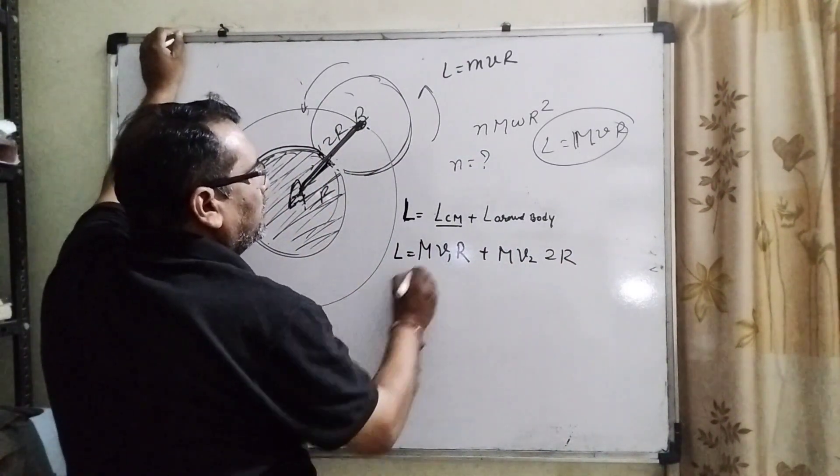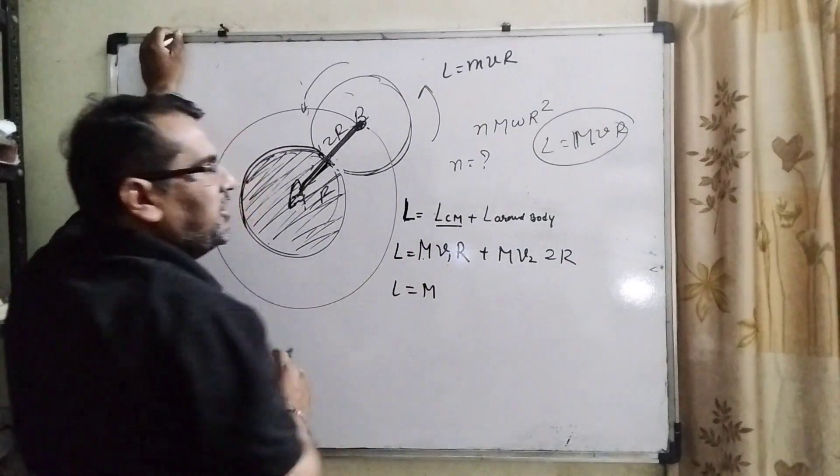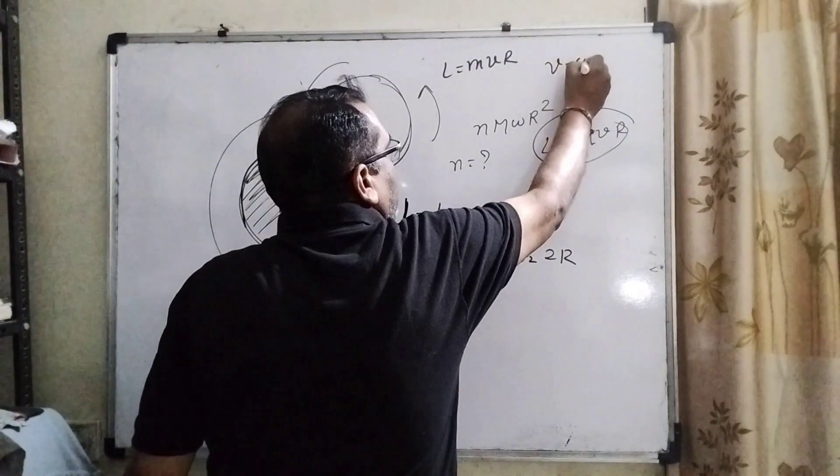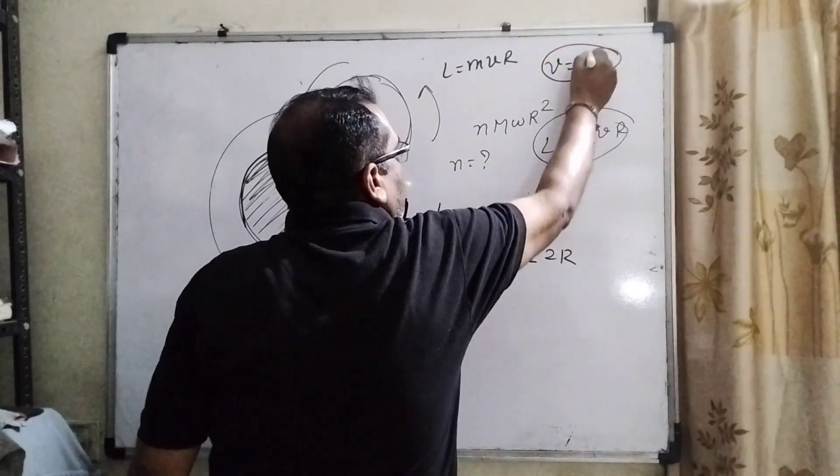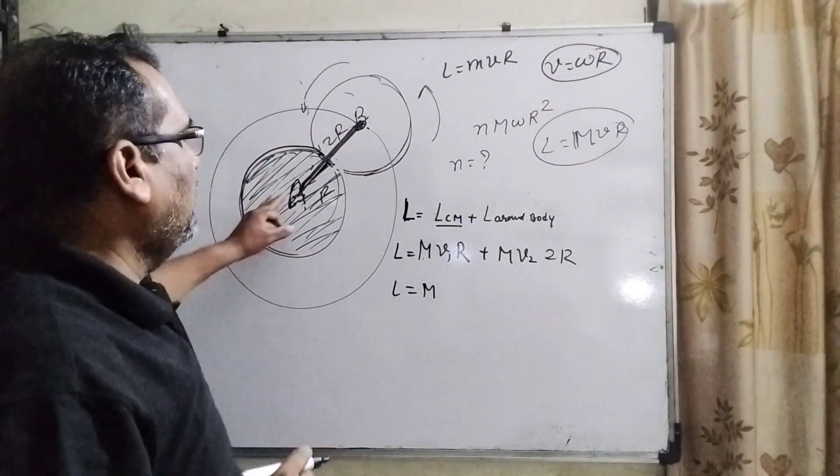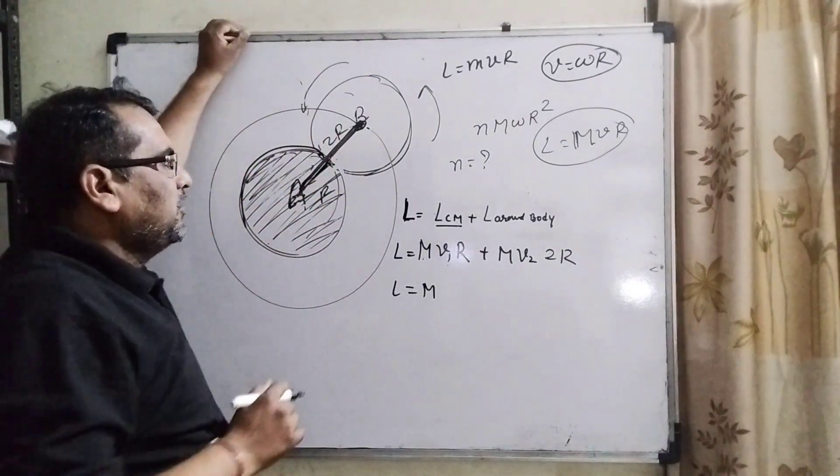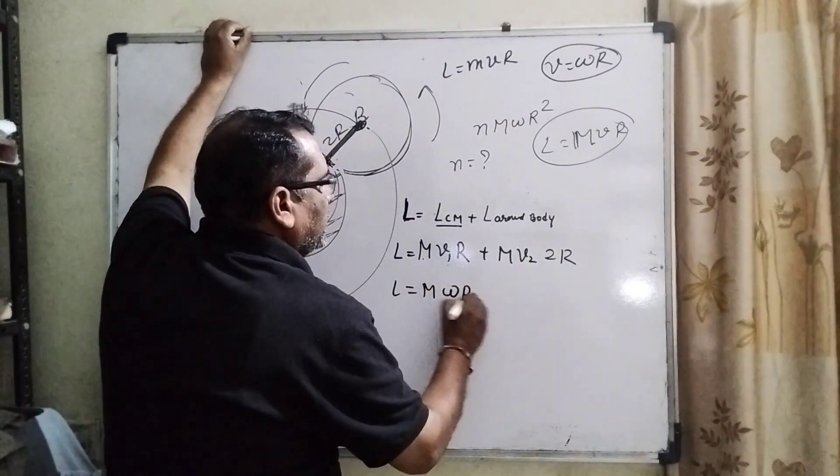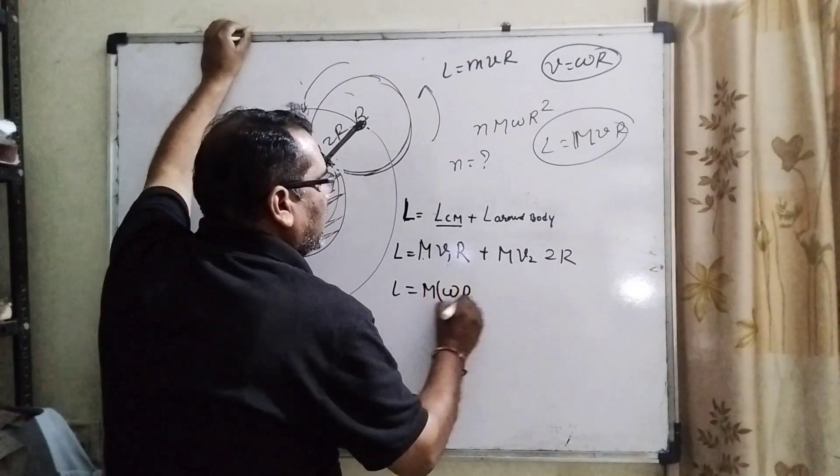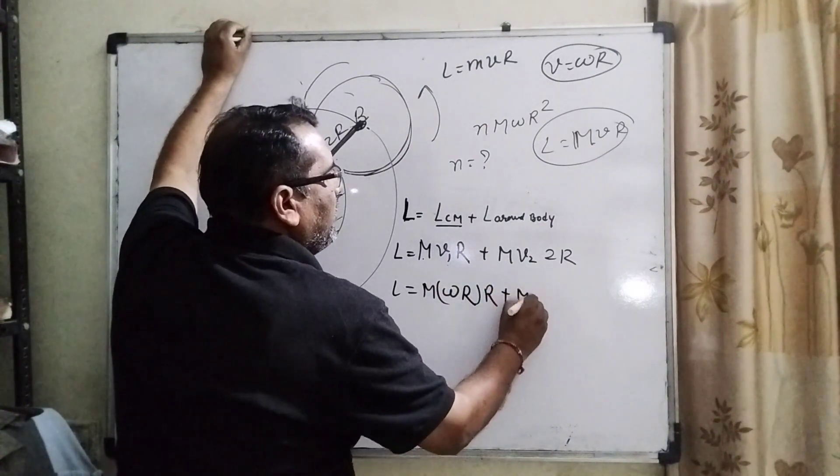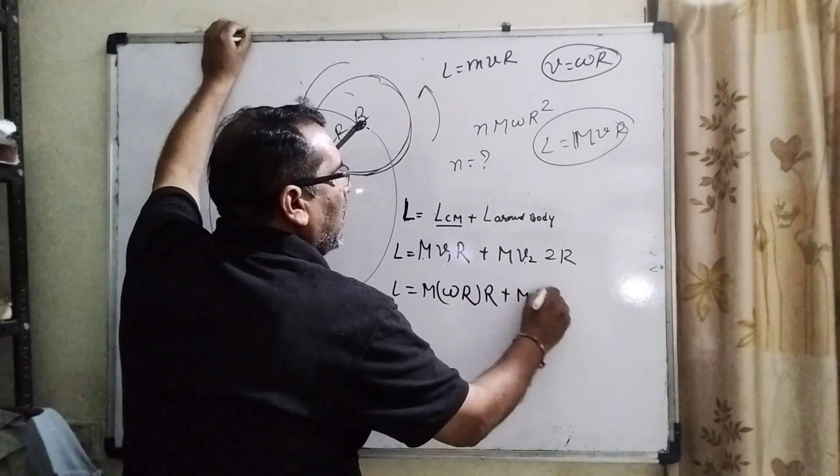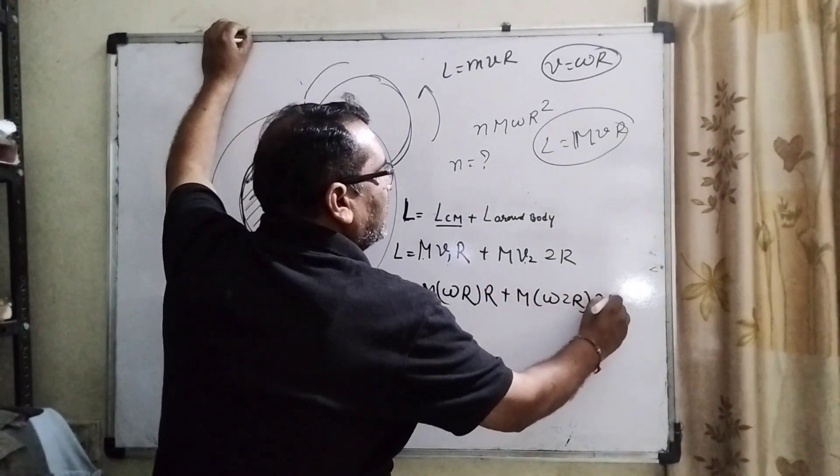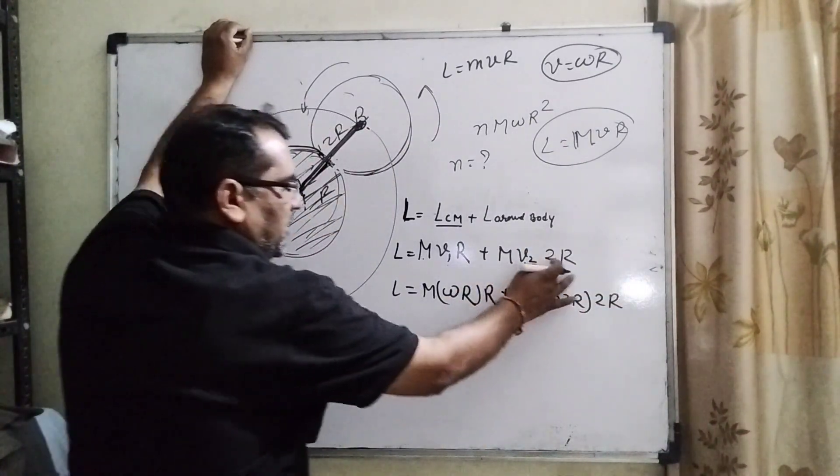L equals M. What is the relation between angular velocity and linear velocity? V can be written as omega R. It is the general formula, and angular velocity is the same. So therefore M omega R times R, plus M omega, and this distance is 2R, again multiply with 2R.